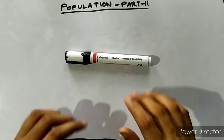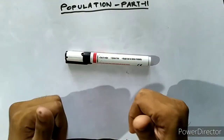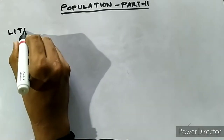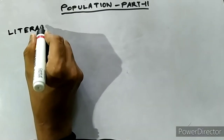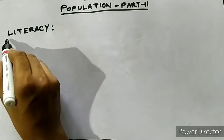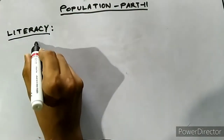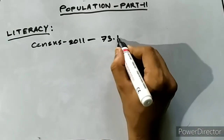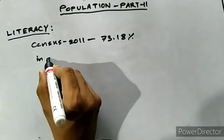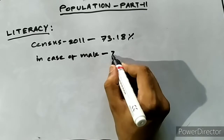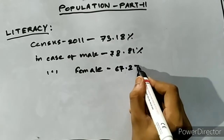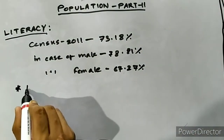Hello everyone, welcome back to Civil Go. We are continuing the GS5 course based on Assam. In the previous class we were discussing the various demographic characteristics of the population of Assam. Today we will talk about the remaining portion of the chapter. Our next important demographic character is literacy. According to Census 2011, Assam has an overall literacy of 73.18 percent. In the case of males it is 78.81 percent and in the case of females it is 67.27 percent.